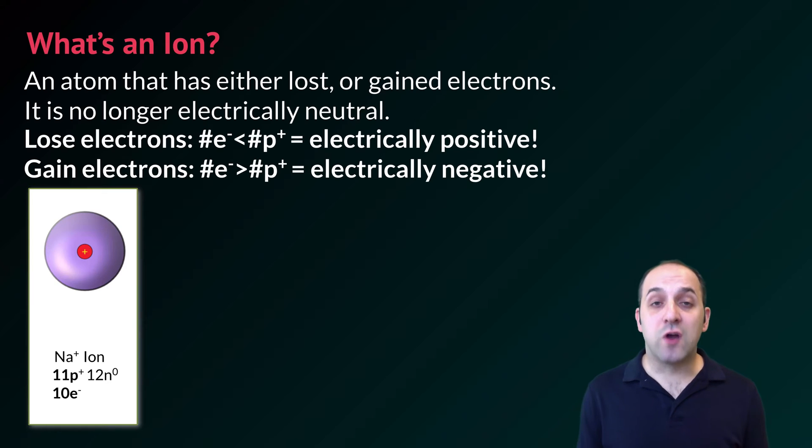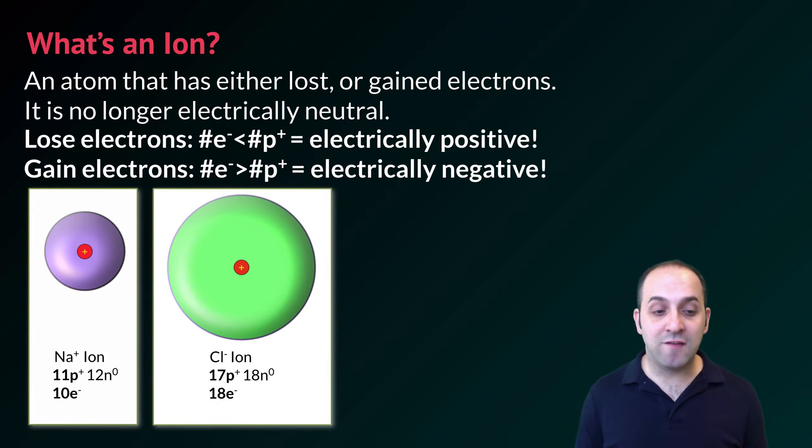When an ion gains electrons, it's now going to have more electrons than protons, and so as a result it's going to be electrically negative. We see that with chlorine. When chlorine forms an ion, its ion is now going to have 17 protons, but now 18 electrons, and so as a result it's going to have an electrical charge of minus 1. That's what an ion is. It's just an electrically charged version of an atom which comes from the gain or loss of electrons.